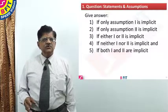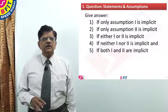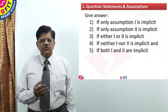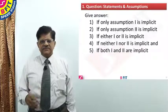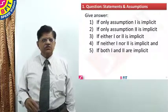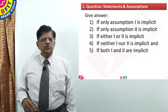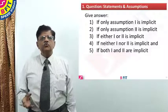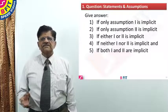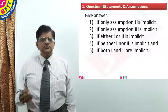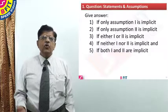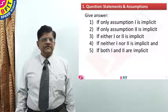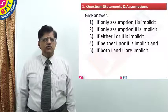You have to choose three if either one or two is implicit. You have to choose four if neither one nor two of the assumptions is implicit. And you have to choose five if both assumptions are valid or implicit. This is the way you have to choose. Now let us see an actual question.